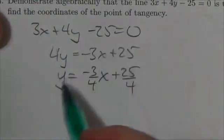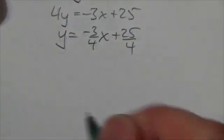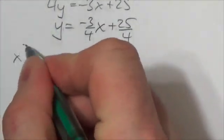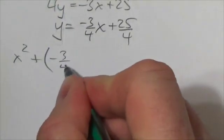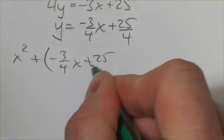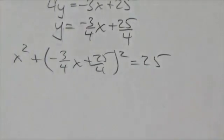Now we'll take this expression and we'll substitute it into the y coordinate here in the equation of the circle. Okay, so that's going to become x squared plus, well, we now know that y is negative 3 quarters x plus 25 quarters squared and that this should all equal 25.